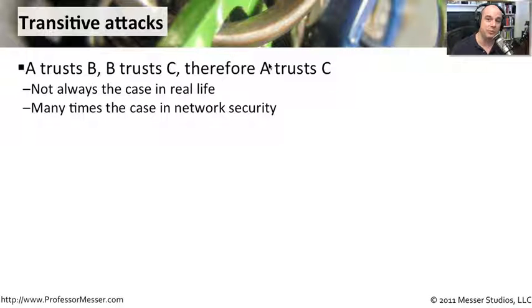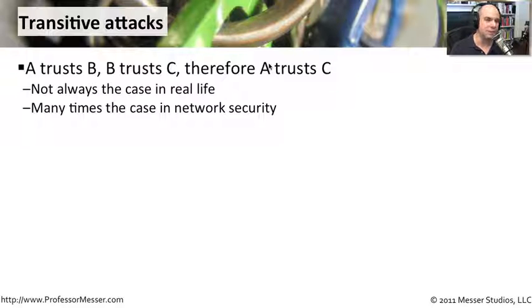Maybe in reality, you really did not want A trusting C. But because of this transitive nature of trust in operating systems, it may already be there. So it's something you really have to look for. In network security, this is an ongoing concern.